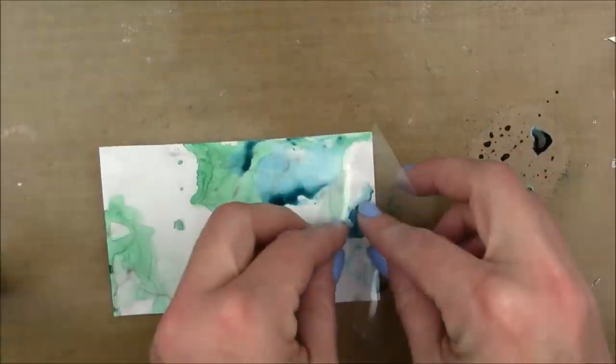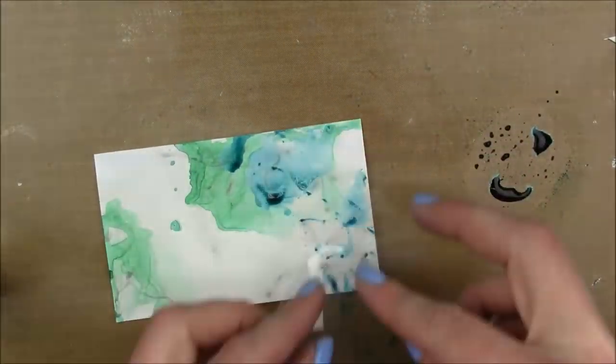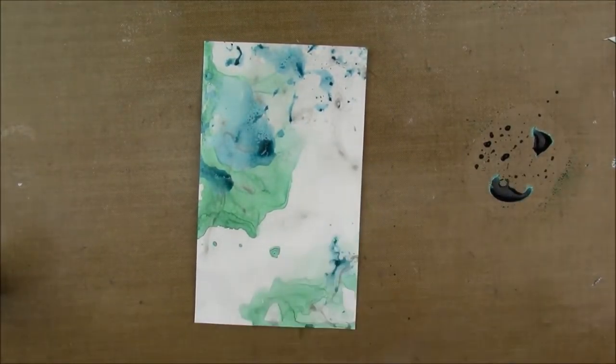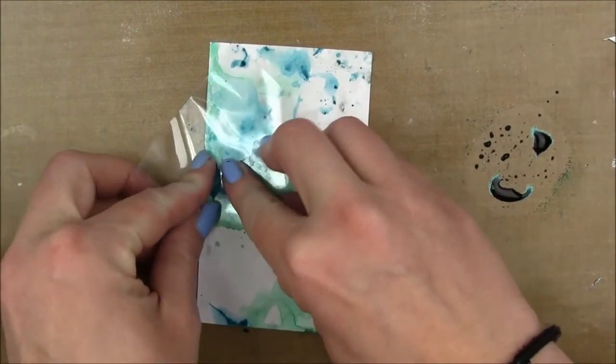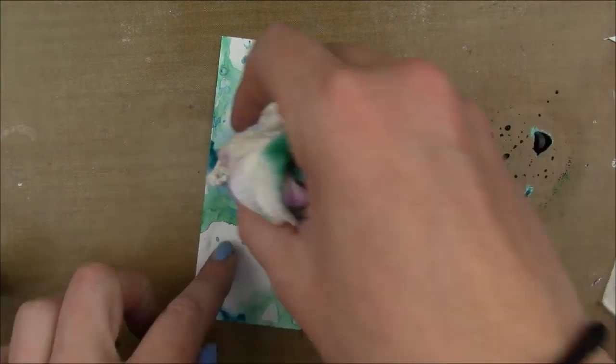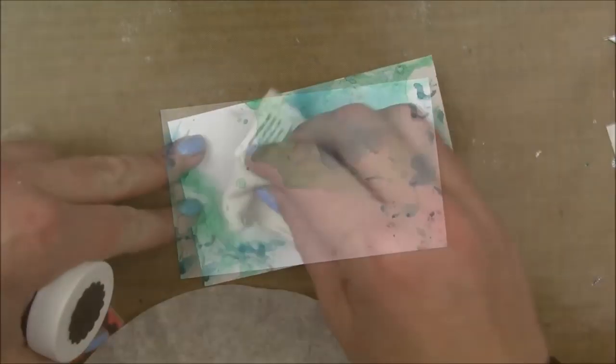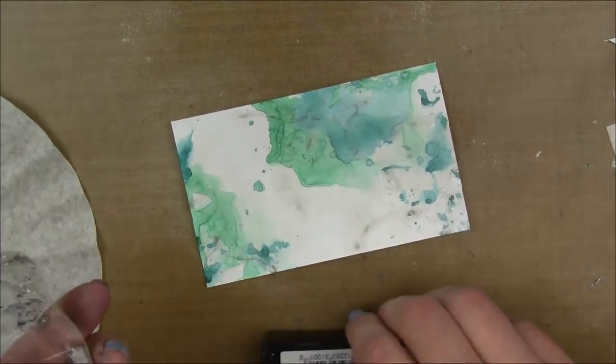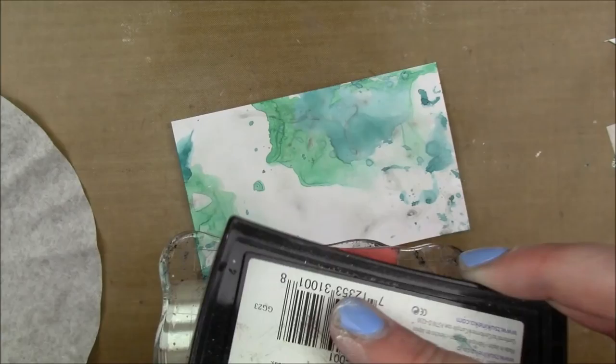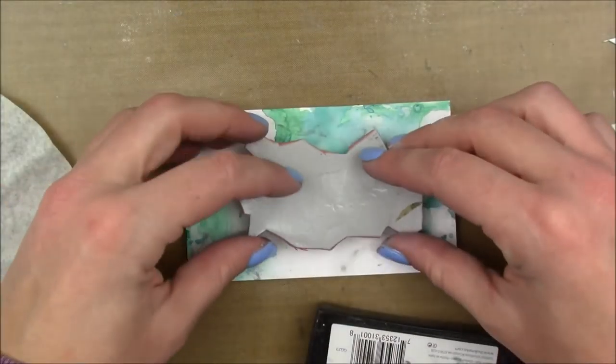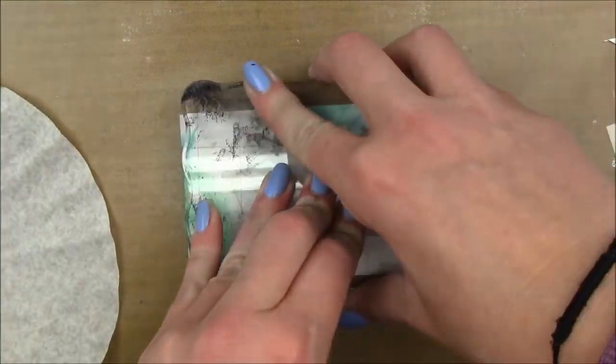Once I'm happy with that, I'm going to make sure it's completely dry and then I'm going to run an anti-static tool all around the index card because I'm going to emboss with this stamp by Viva Las Vegas stamps. It's like a rose cluster designed by Kat Kerr.